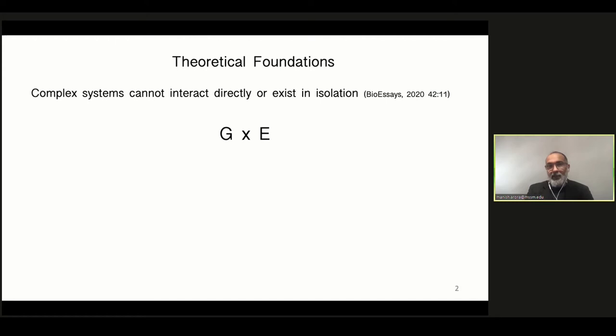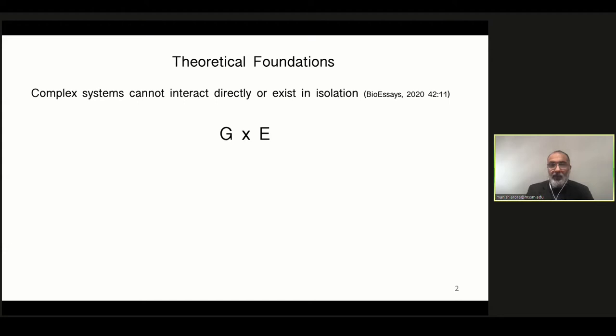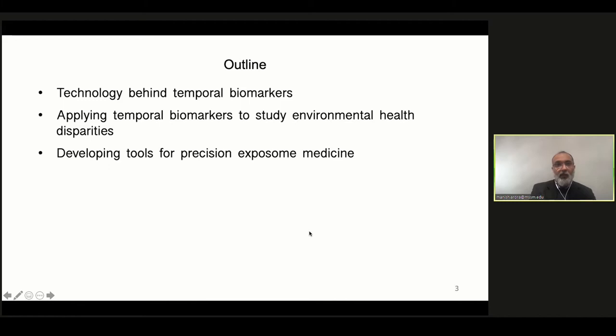Because the title of my slide has the word 'environmental biodynamics,' I want to briefly introduce that concept. It can be summarized in one sentence: complex systems cannot interact directly or exist in isolation. I must acknowledge my colleague Dr. Paul Curtin, who has been a major contributor to this theory, which has been published recently. All this theory says is that the G×E construct of health and disease is incomplete if we don't consider the role of time — time serves as the interface between how genes and environment interact.